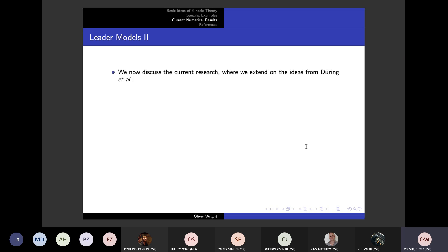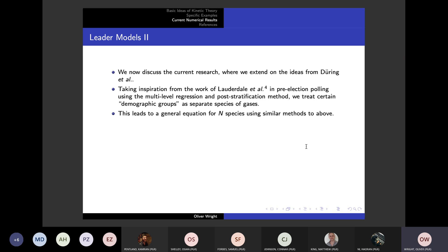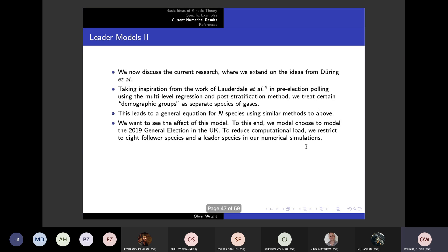In my current research, what I'm actually doing is I'm extending these ideas by taking inspiration from some other pre-election polling concepts. We are treating diverse demographic groups as separate species of gases. So we came up with a general solution for N species. And then we chose to run this model on something simple, something like the 2019 general election in the UK.